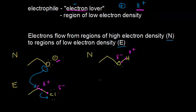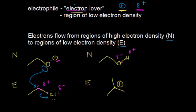Another electrophile could be a carbocation — a carbon bonded to three other carbon groups with a plus one formal charge. A carbocation, being positively charged, is attracted to electrons, so it functions as an electrophile, a region of low electron density. The oxygen portion of ethanol, being partially negative with lone pairs of electrons, can act as a nucleophile. This lone pair of electrons can attack the carbocation carbon, and this would form a new covalent bond between those two molecules. Once again, we see electrons flow from regions of high electron density — the nucleophile — to regions of low electron density — the electrophile.